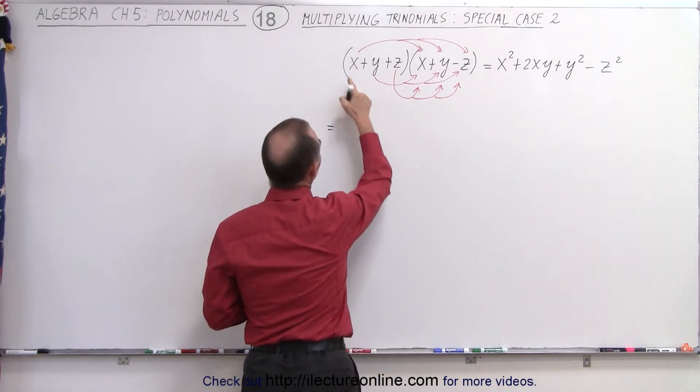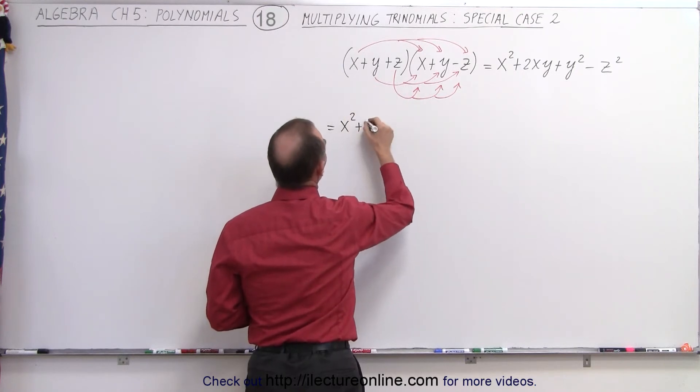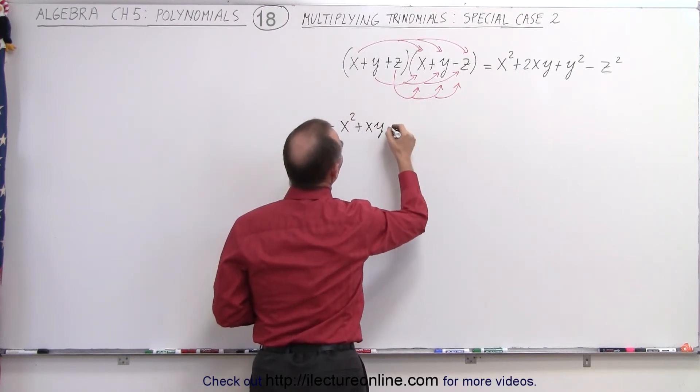So this is equal to x times x, which is x squared, x times y, which is plus xy, and x times a negative z, which is a minus xz.